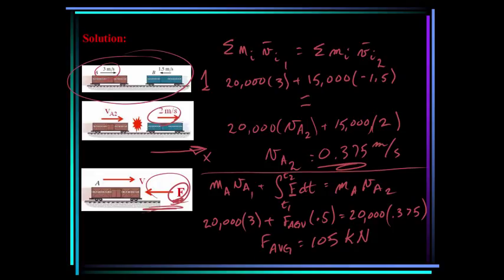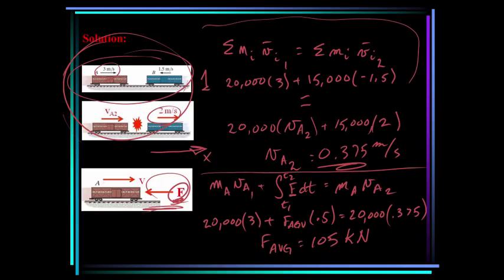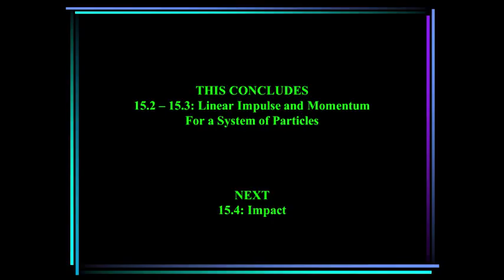This example covered two cases: conservation of linear momentum for the system of both cars (no external forces acting), and impulse-momentum for a single car with an average force acting over a time interval. This concludes sections 15.2 to 15.3 on linear impulse and momentum for a system of particles. Next up is chapter 15.4 on impact.